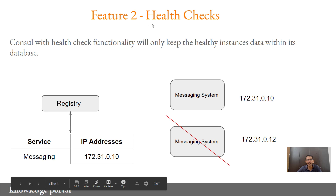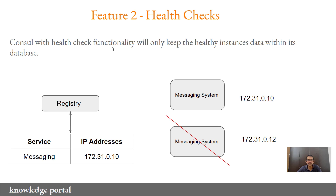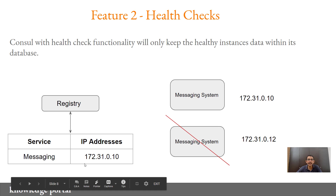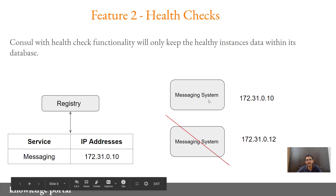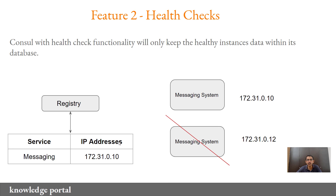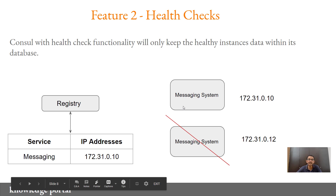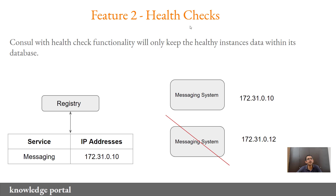The second feature is health check. Consul, with the help of its health check functionality, will only keep healthy instances' data within its database. Let's assume there are two servers where the messaging system is implemented: 172.31.0.10 and 172.31.0.12. If the second server is not working for some reason, Consul will not persist the IP address of the failed server in its registry. So when the payment system queries Consul for the latest set of IP addresses for the messaging system, Consul will not provide the IP of the server where the application is not functioning — only the IP of the server where messaging is working well.